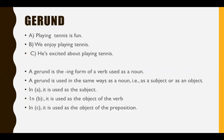A gerund is the -ing form of the verb and it's used as a noun. It can be a subject — like 'playing is fun' or 'playing tennis is fun.' It can be used as an object — like 'we enjoy playing tennis.' And it can also be used as an object to a preposition — like 'he is excited about playing tennis.' So in A it's subject, in B it's object, and in C it's object to a preposition.